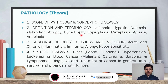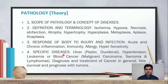Continuing the terminology: hypertrophy, hypoplasia, metaplasia, aplasia, anaplasia. Number three is the response of the body to injury and infection — acute and chronic inflammation, immunity, allergy, and hypersensitivity. The fourth chapter covers specific diseases such as ulcer, for example peptic ulcer, also hypertension.